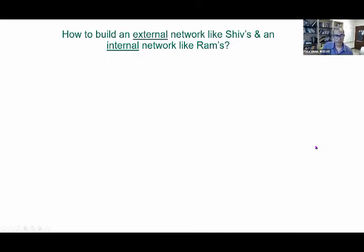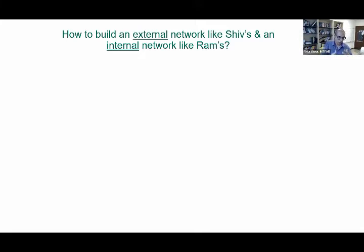The question arises: how do you build an external network like Shiv and an internal network like Ram? A strong cohesive team internally is great for execution, but a very sparse network externally is great for coming up with new ideas.